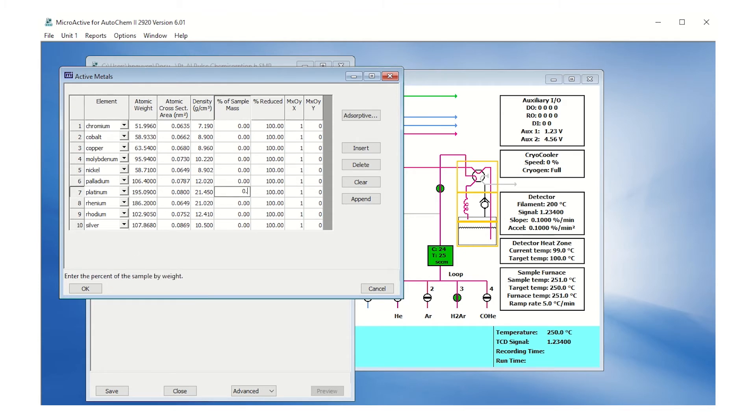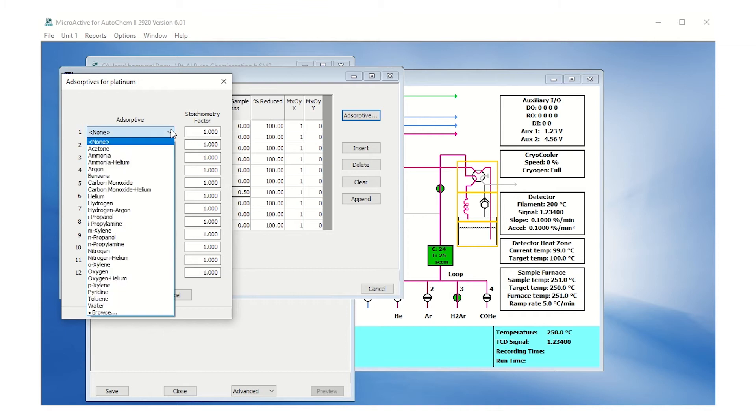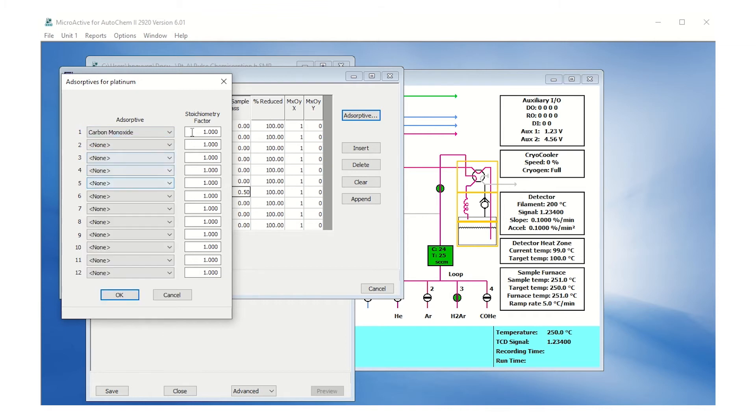For this example, we used 0.5%. While the platinum row is still selected, click the absorptive tab. Use the drop-down menu to change from None to Carbon Monoxide. Set the stoichiometry factor to 1.